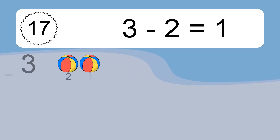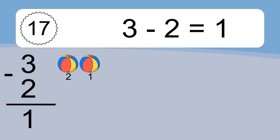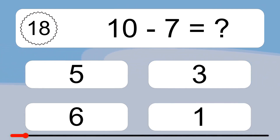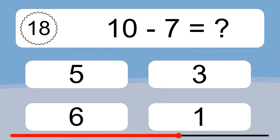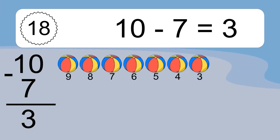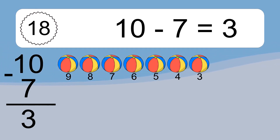3 minus 2 equals what? 3 minus 2 equals 1. Let's count it: 2, 1. 10 minus 7 equals what? 10 minus 2 equals 3. Let's count it: 9, 8, 7, 6, 5, 4, 3.